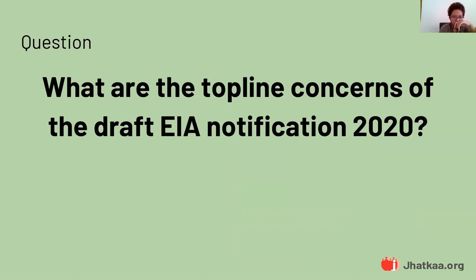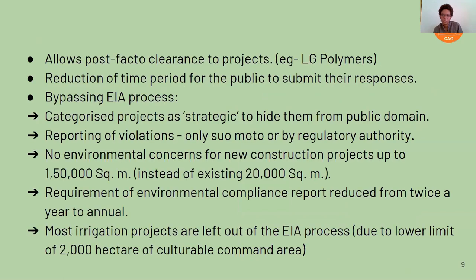What are the top-line concerns of Draft EIA 2020? It has several dangerous loopholes. It allows post-facto clearance — meaning a project already running without environmental clearance can also be awarded clearance. This was a temporary norm for some projects under EIA 2017, but Draft EIA 2020 wants to make it permanent. This is extremely dangerous: any environmental damage caused by such projects is likely to be waived off as the violation gets legitimized.